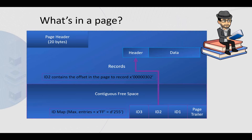This is what a file page set data page looks like. In the contents we have the page header, which is 20 bytes, and the actual records — each with a record header and record data. The records are defined either by the user or by DB2, which can be part of the user's data or the DB2 catalog and directory. We also have overflow records, pointer records, contiguous free space, an ID map at the bottom, and a page trailer.